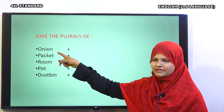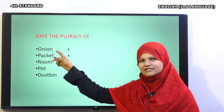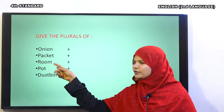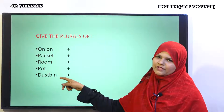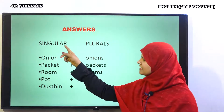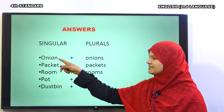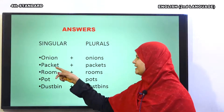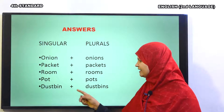The words are: onion, packet, room, pot, dustbin. Onion means pyaaz. Next one is packet — yaane thaili ya phir bag. Next, room — kamra. Pot means a vessel, bartan. Next is dustbin. Now let us see what their plurals are. The answers are: onion — onions, packet — packets, room — rooms, pot — pots, dustbin — dustbins.